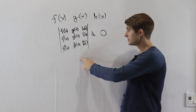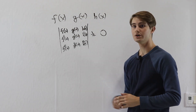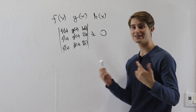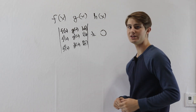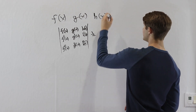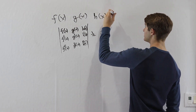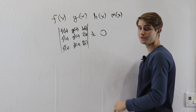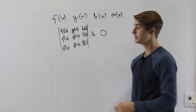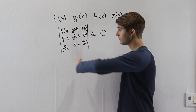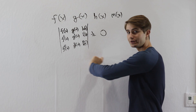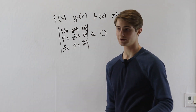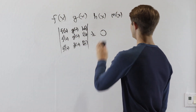We can extend this idea to however many functions we want. If we wanted to add another function, say m, all we would have to do is turn the 3 by 3 matrix into a 4 by 4 matrix and include the third derivative in the last row as well. Again, if the determinant is not equal to zero, then all the functions are linearly independent.